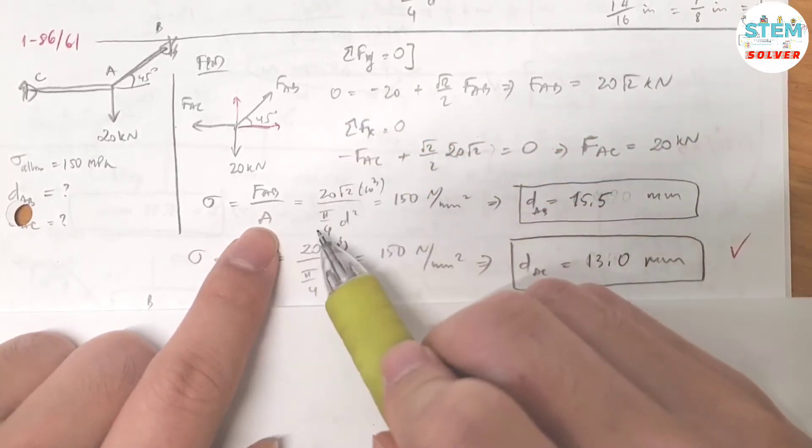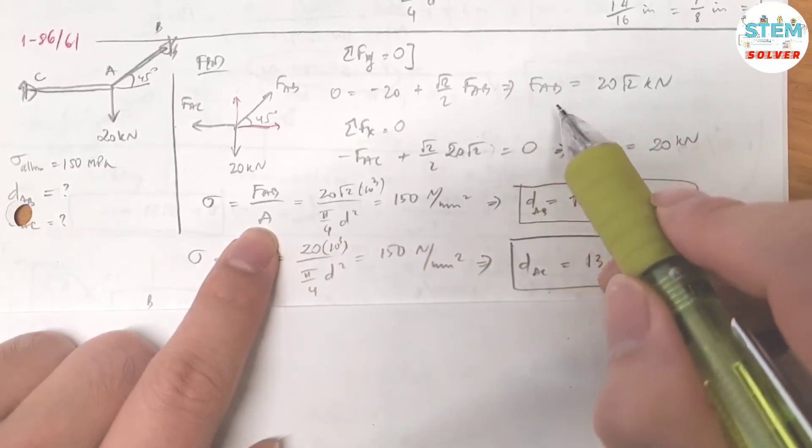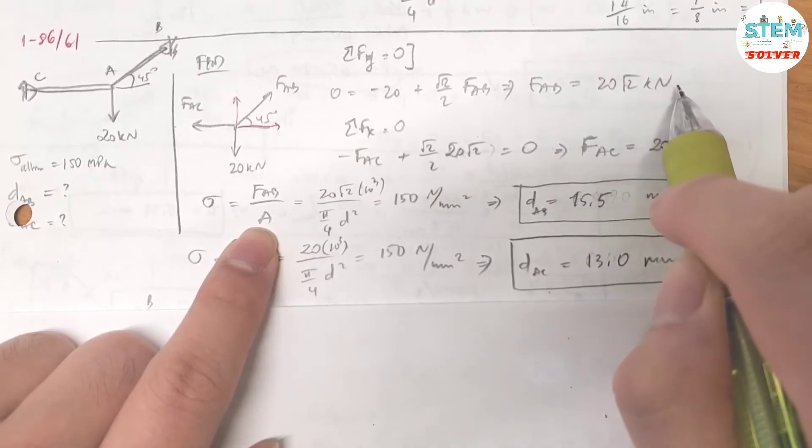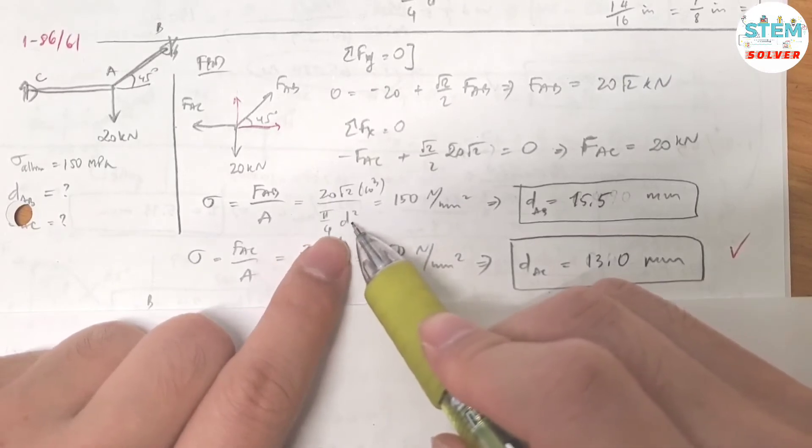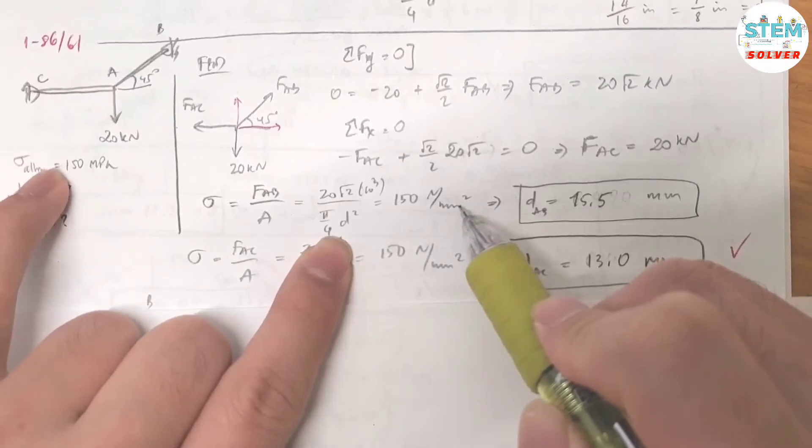Plug in the values. f is 20 square root of 2 times 10 times 1000 to get newtons, divided by the area, which is pi over 4 times d squared, equals 150 newtons per millimeter squared, which is the allowable normal stress.